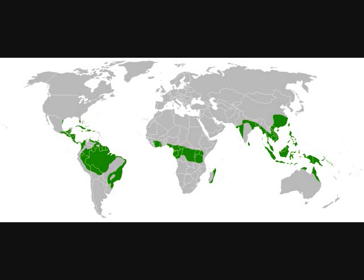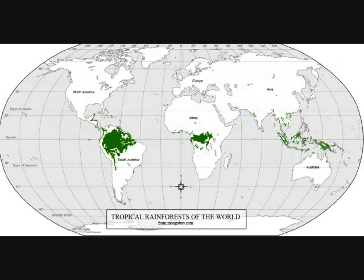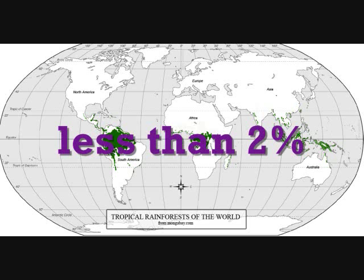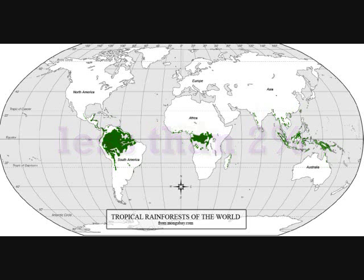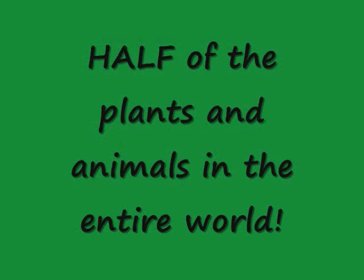Rainforests used to cover an estimated 14% of Earth's surface. Now, rainforests cover less than 2% of the Earth's total surface area. But even though rainforests cover a very small part of Earth's surface, they contain half of the plants and animals in the entire world.